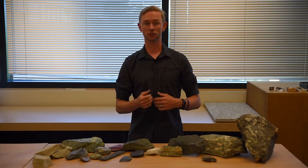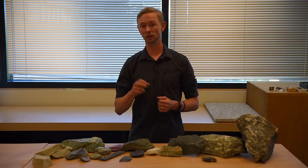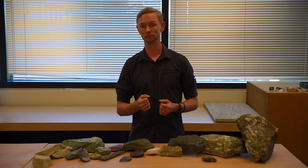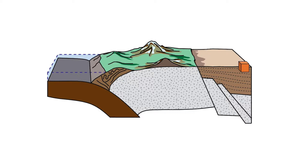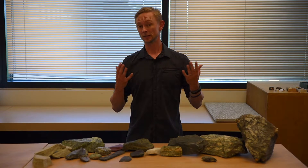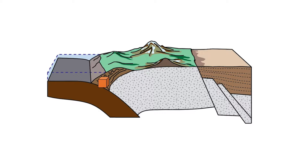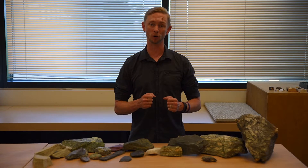In order to subject a rock to stresses great enough to cause metamorphism, one or a combination of two things needs to happen. First, the rock could be buried deep within a sedimentary basin, and the weight of the overlying rocks will compress the deeper ones — this is known as burial metamorphism, and is the result of lithostatic stress. Second, a rock could be caught up in a convergent tectonic boundary and subject to intense differential stress. This is known as regional or tectonic metamorphism.